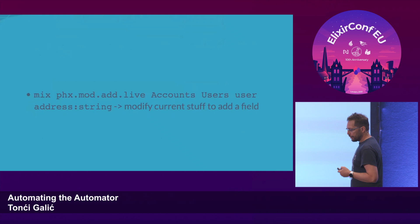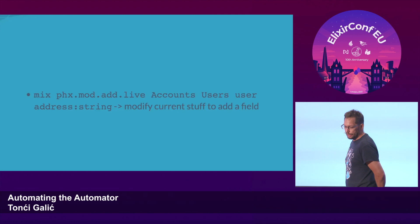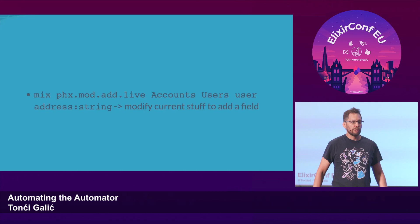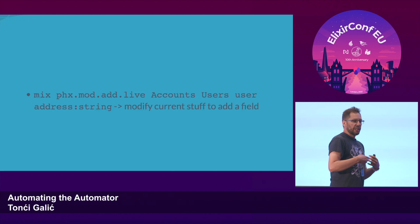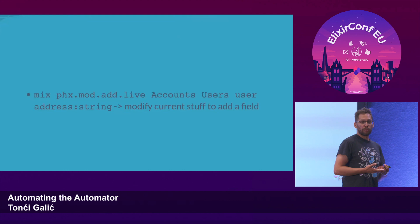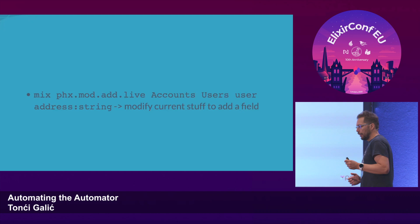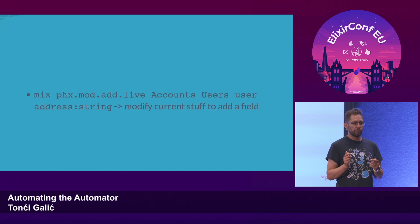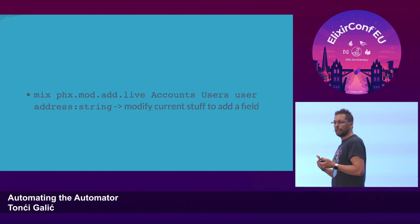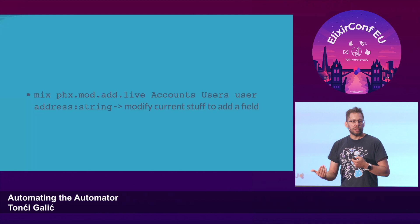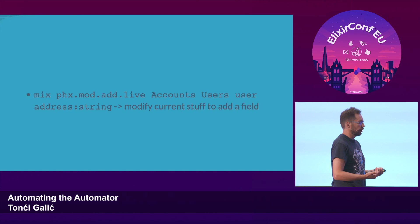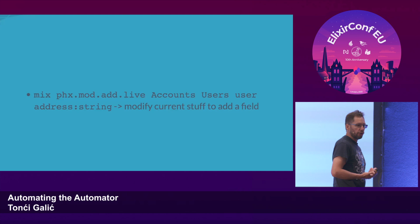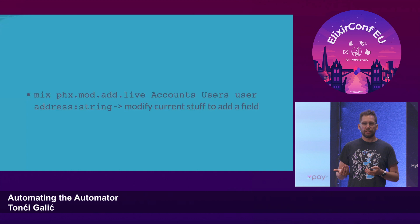Rails got famous because David made a video showing how to create a blog in 15 minutes using generators. But we as developers don't always start with a fresh project — we sometimes change a blog to add a comment section, allow users to log in, and so on. That's not possible from a generator because it's just a string template and doesn't know what your code does. Now that we have Sorcerer, we could think about having a tool that not only builds a blog in 15 minutes but also changes what we've built to include a comment section or user login. I don't think any other framework already has that.